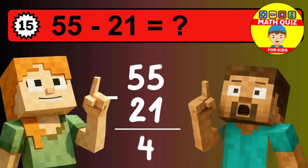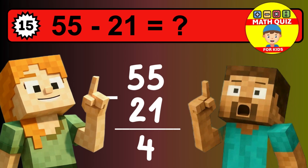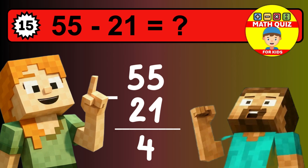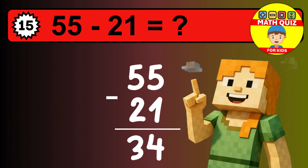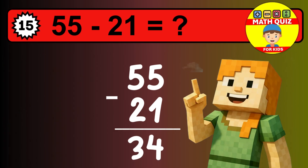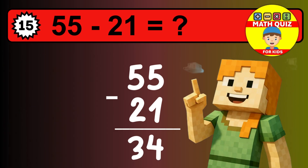We start with the units: 5 minus 1 is 4. Then we go to the tens: 6 minus 2 is 3. The final answer is 34.